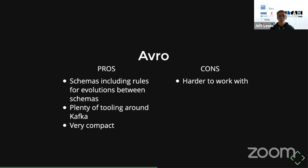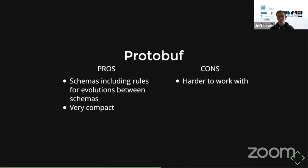Avro was for a long time the only format supported by the Confluent Schema Registry. You'll see a lot of tooling — both third-party and built into Kafka or Confluent tools — with support for Avro. Avro also has schema evolution rules that dictate what sorts of changes you can make between schema versions, giving consumers guarantees around the data they'll receive downstream. Protobuf is basically similar to Avro in many ways at a high level — it comes down to which works better for your use case or which you're more familiar with.